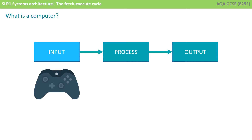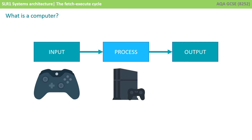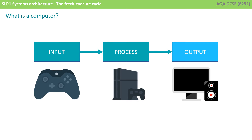But this could be way more complex. For example, with a game console the input could be the buttons you press on a controller. The processes would then be carried out by the console itself, and the output would be some form of update to a monitor and sound out through a speaker, possibly with vibration feedback through the controller.